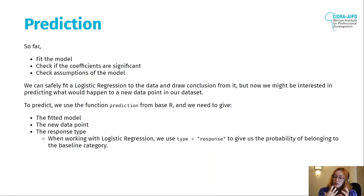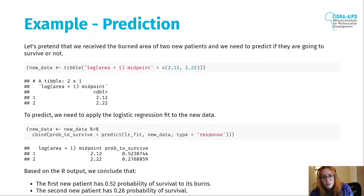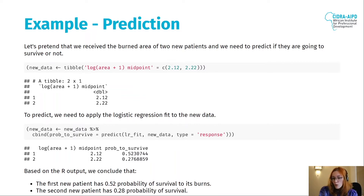As we're working with logistic regression, we use type='response', which gives us the probability of belonging to the baseline category. Going back to our third-degree burns example, I'll pretend I have two new patients. The only variable we need is the area, called 'log area plus one midpoint.' I'll give one patient an area of 2.12 and the other a larger but similar area of 2.22.